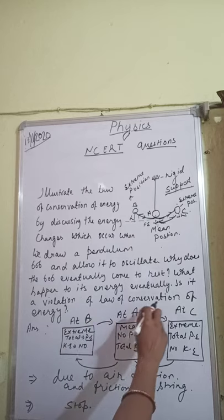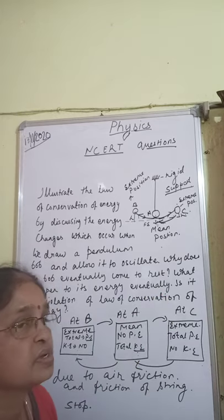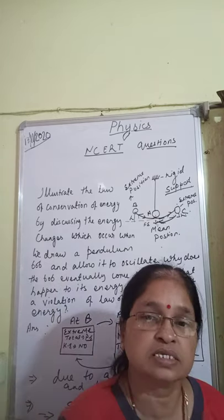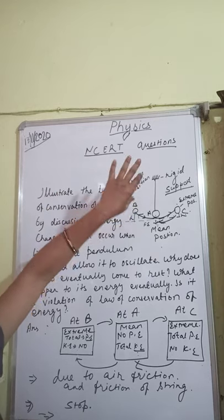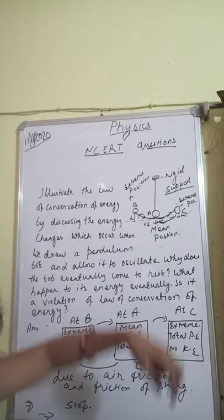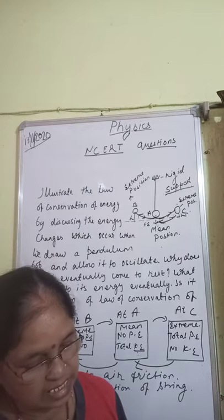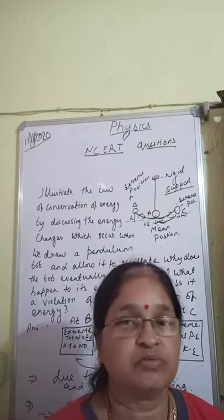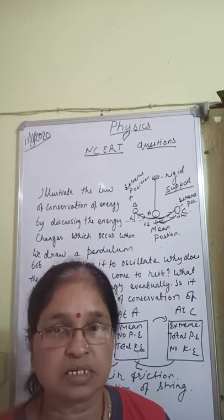Is this a violation of the law of conservation of energy? No. There is no violation, because as the bob moves, energy is transformed from one form to another — from potential energy to kinetic energy or kinetic energy to potential energy. Due to air friction, the energy eventually becomes zero, but the law of conservation of energy is still followed. Total energy remains constant.